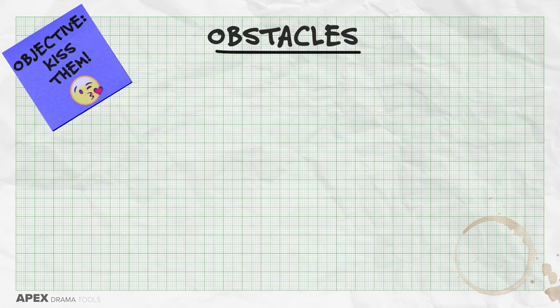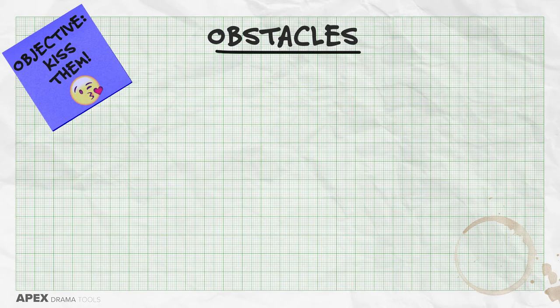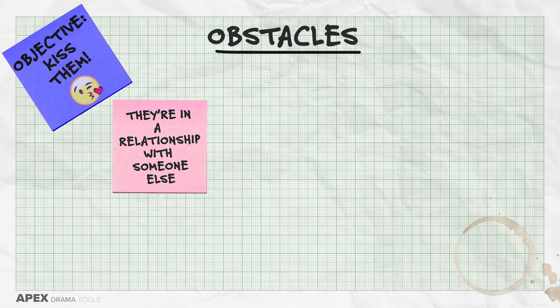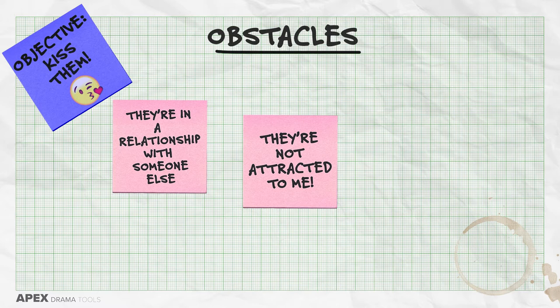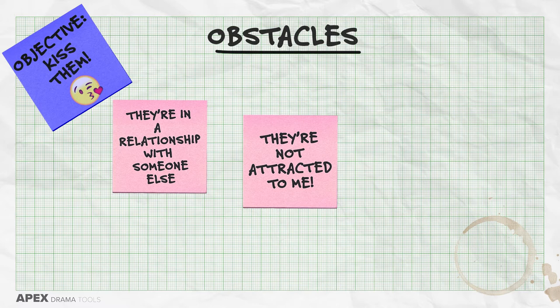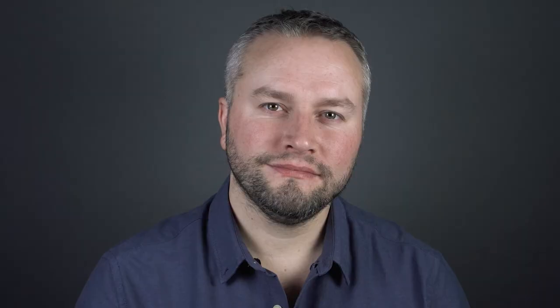Your character's objective is to kiss another character. However, the other character is already in a relationship — that is an obstacle. Perhaps the other character is not attracted to you like you are to them — that's another obstacle. Perhaps the other character needs to leave, so time is a constraint — time is an obstacle. Your character therefore needs to implement tactics to win over, complete, or overcome this obstacle.